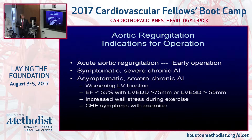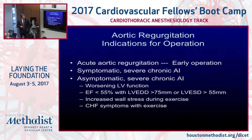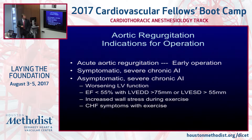The indications for operation with aortic insufficiency: if you have acute severe aortic regurgitation, you need early operation because the heart hasn't developed compensatory dilatation yet, and severe acute AI is deadly very quickly. If you have symptomatic severe chronic AI, that's an indication to operate. For asymptomatic severe chronic AI, you want to operate before developing signs of LV failure — worsening LV function, decreased EF, increased LV end-diastolic diameter, or signs of wall stress during exercise.